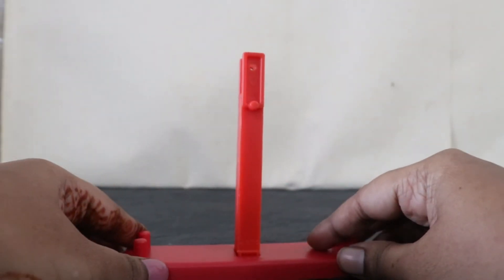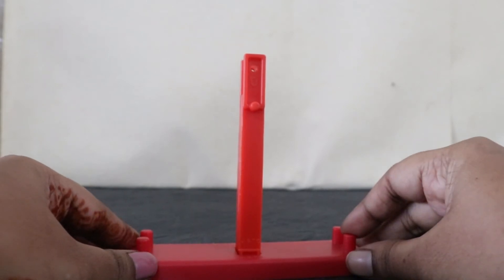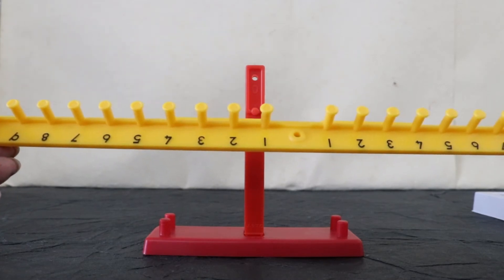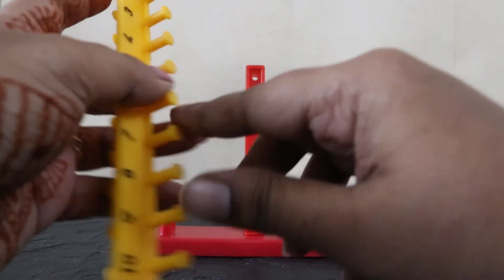Now I place this here. Next I take the number bar. I have to balance this number bar horizontally onto the vertical rod.